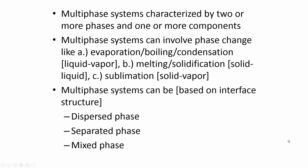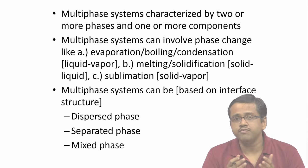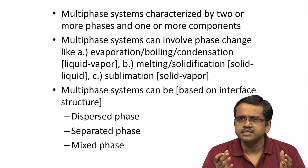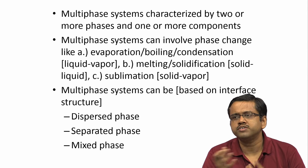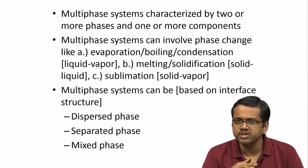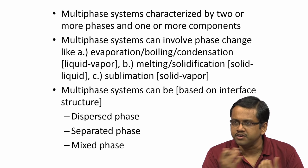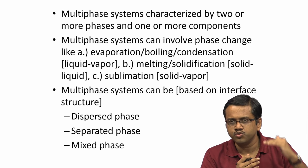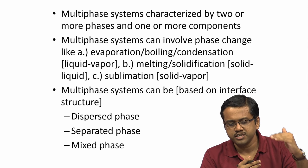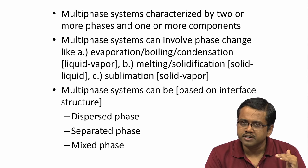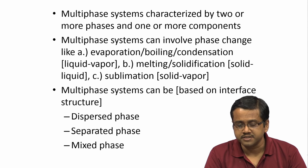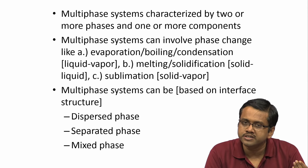Multiphase systems in general are basically characterized by two or more phases, and they can have one or more components as well. For example, if you have water and water vapour — say you take a saucer filled with water and keep it exposed in an open environment — there is liquid water and there is water vapour: two phases. Because this is kept open in the environment, air is also another component that is present, making it also an example of a multi-component system.